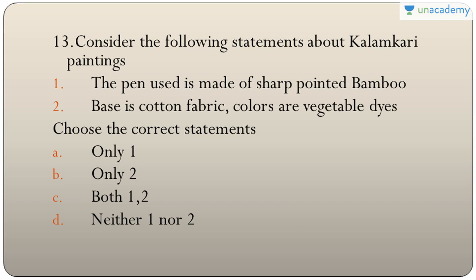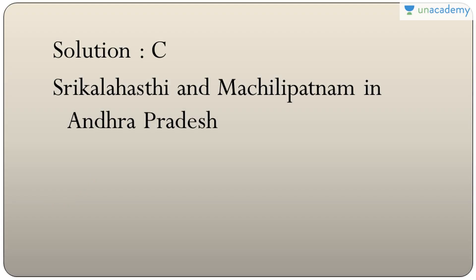Question thirteen: statements about Kalamkari paintings — the pen used is made of sharp-pointed bamboo, the base is cotton fabric, and colors are from vegetable dyes. All three are correct, so the answer is C — both one and two. Kalamkari painting is mainly found in Srikalahasti and Machilipatnam in Andhra Pradesh.